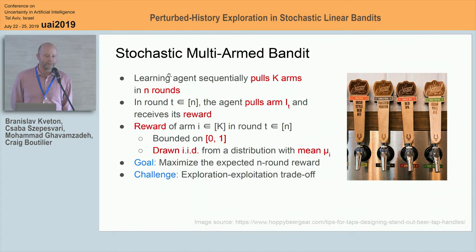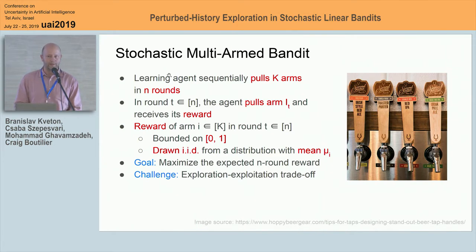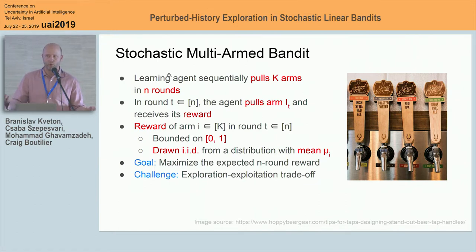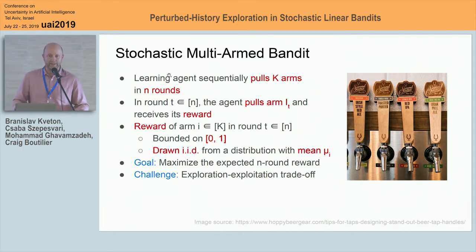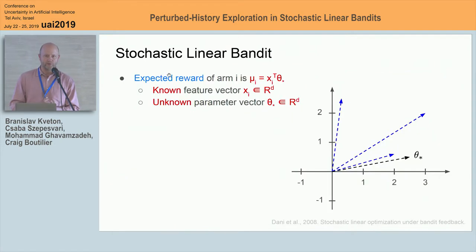The goal of the learning agent is to maximize its expected end-round reward — in some sense, to learn the best arm as quickly as possible. This is challenging because the agent doesn't know the expected rewards of the arms in advance, so it has to explore by playing arms. And once you learn the best arm, you want to exploit it for as long as possible. Multi-armed bandits have many applications; at Google I've used them in advertising, in YouTube for learning to rank, and for hyperparameter tuning of learning algorithms.